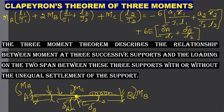In this equation, M_A is the moment at A, M_B is the moment at B, M_C is the moment at C. L1 is the span length of the first span and L2 is the length of the second span. I1 is the moment of inertia of the first span and I2 is the moment of inertia of the second span. A1 is the area of the bending moment diagram of the first span and A2 is the area of the bending moment diagram of the second span. X̄1 and X̄2 are the distances of the centroid of the bending moment diagram from the respective supports. Delta_A and delta_B are the settlements of the supports.